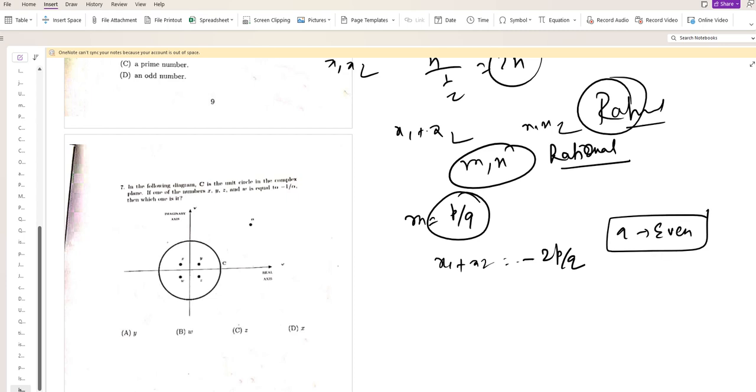x1 times x2 will be 2m. 2m is rational, so n must also be an integer. So n is an integer.